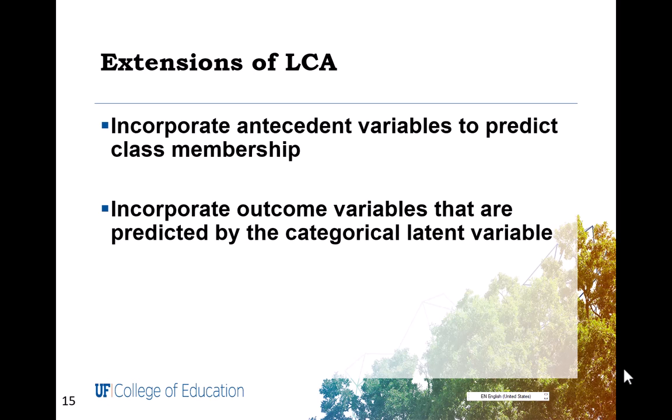Once latent classes are enumerated, in other words, once a final model is identified with a certain number of latent classes, it's possible to incorporate predictors of class membership or incorporate outcome variables that are predicted by latent classes. You don't want to do that simultaneously with the model selection for the number of latent classes because these covariates or outcomes can affect the decision